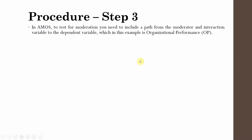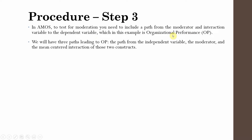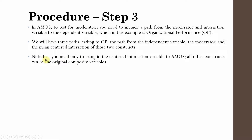How do we do this in AMOS? To test moderation, you need to include a path from the moderator and the interaction to the dependent variable — in this example, organizational performance. We will have three paths leading to OP: the path from the independent variable, the moderator, and the mean-centered interaction of the two constructs. Note that you only need to bring the centered interaction variable; all other variables are the original composite variables. Also make sure to add an error term to your dependent variable.